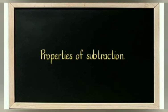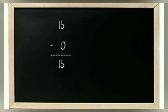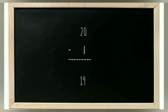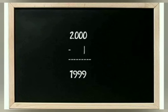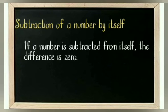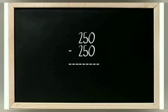Properties of subtraction — Property of zero: if 0 is subtracted from a number the difference is the number itself. For example, 5 minus 0 is 5, 15 minus 0 is 15, 2020 minus 0 is 2020. Property of one: if 1 is subtracted from a number the difference is the predecessor of the given number — 5 minus 1 is 4, 20 minus 1 is 19, 49 minus 1 is 48, 2000 minus 1 is 1999. Subtraction of a number from itself: if a number is subtracted from itself the difference is 0 — for example 6 minus 6 is 0, 18 minus 18 is 0, 250 minus 250 is 0.